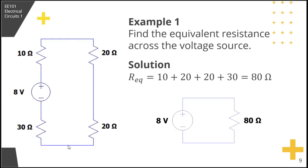Another qualification for series is that the same current passes through them, which is true for this circuit. So these four resistors are in series. And since they're in series, as we saw in the previous slide, the equivalent resistance would just be the sum of the resistances.